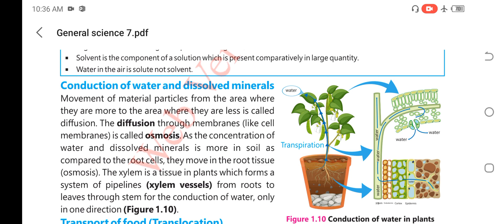Movement of water and dissolved minerals in plants also takes place through the process of osmosis.